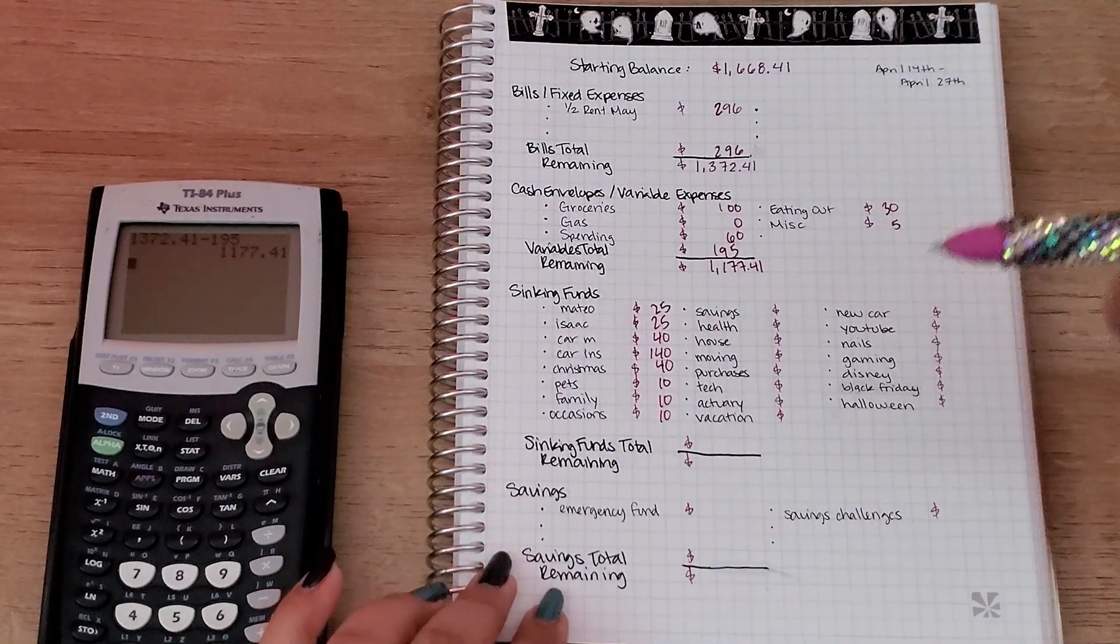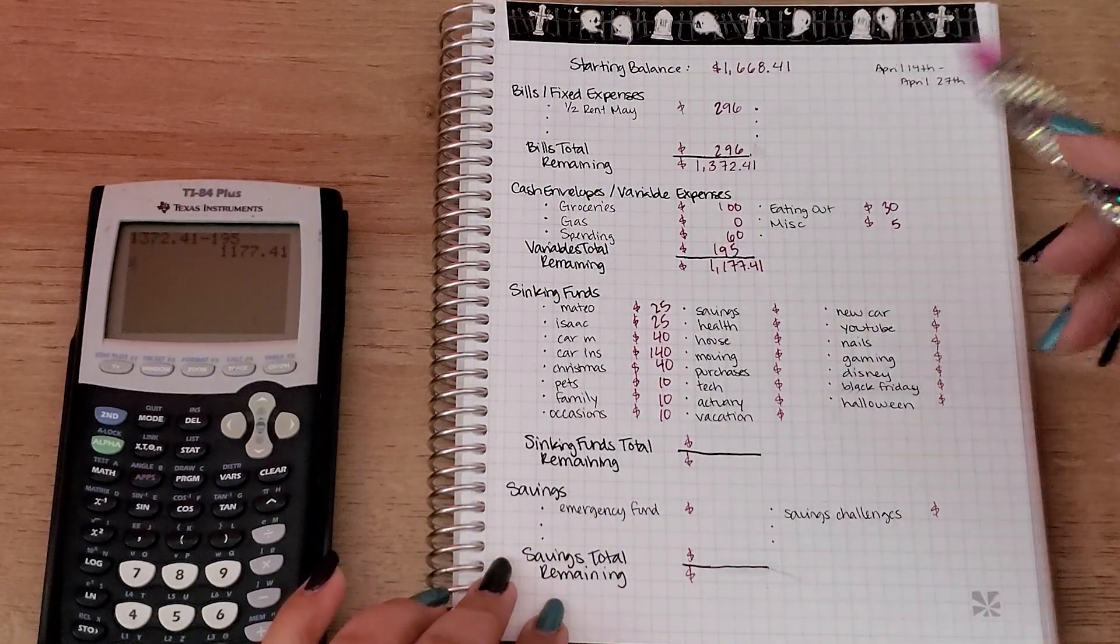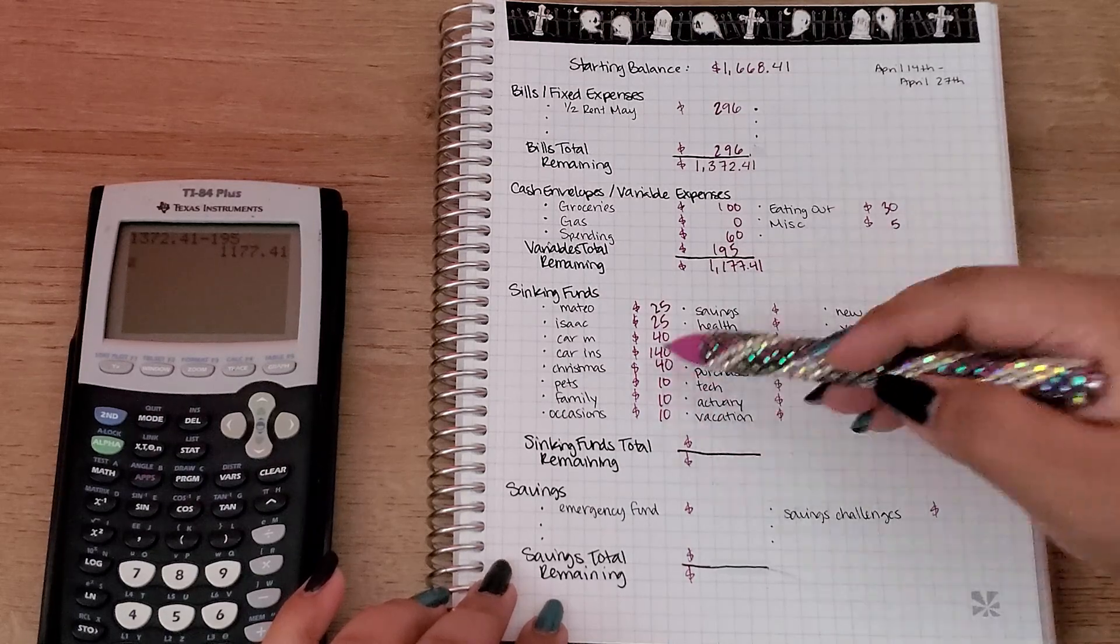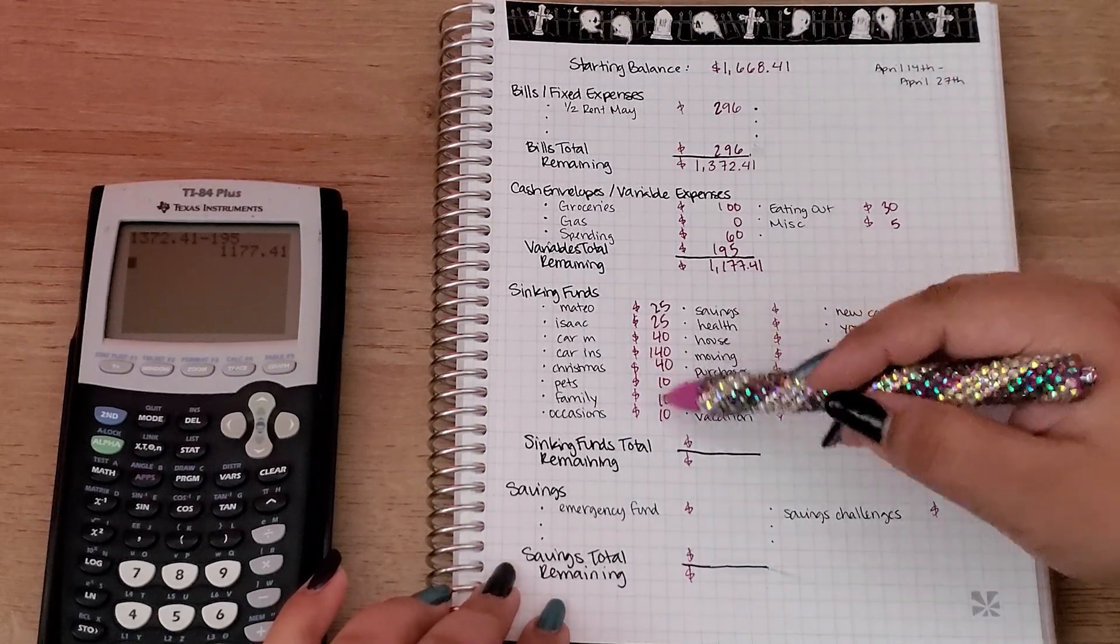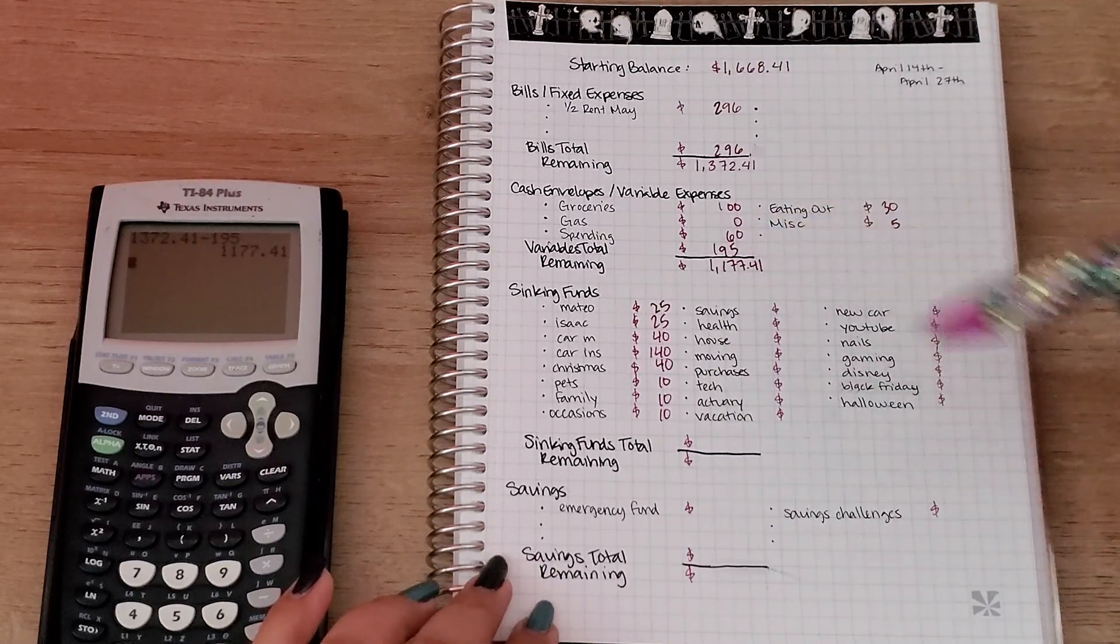And then pets, family, and occasions are all going to get $10. We originally thought about going to the zoo, but I'm pretty sure we're not going anymore. So I'm not really going to budget anything extra for the family envelope. If I really need to, I'll just take out of my spending.